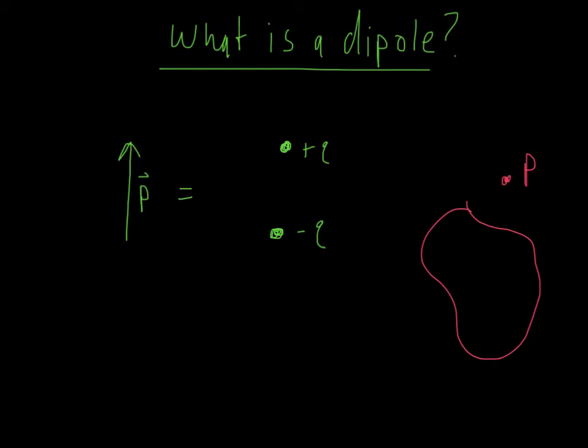That's what we've been doing so far. It turns out that it's more helpful in some cases to actually count up pairs of charges instead of single charges, and that may seem odd. Why we're going to do this is we're going to look at bodies of matter — dielectrics like plastic and glass — that are electrically neutral.